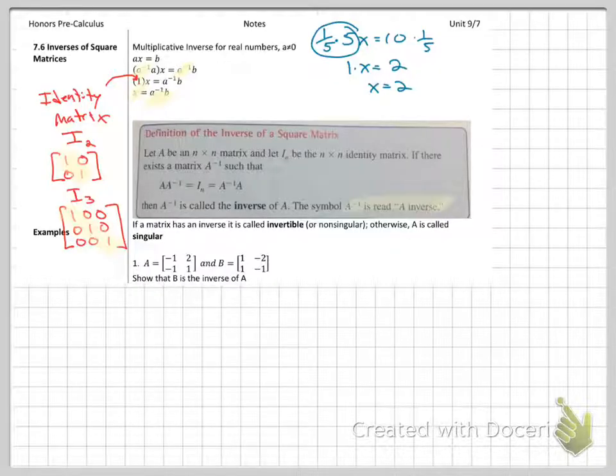So in the little gray box, it says if you are multiplying A times A inverse, you should get the identity matrix. Same thing if you're doing it in the other order. So notice there's two sides to this equation.